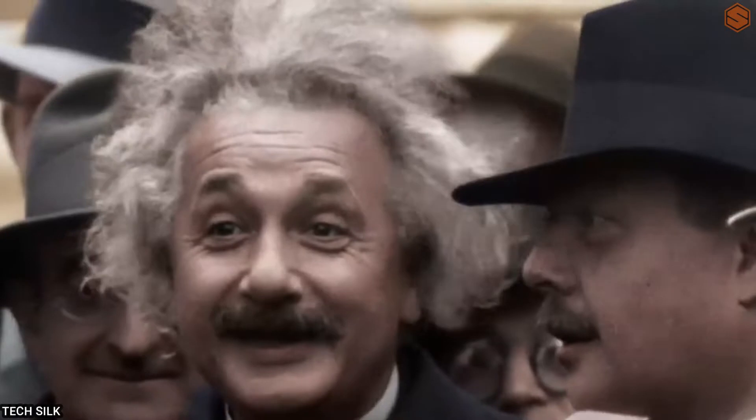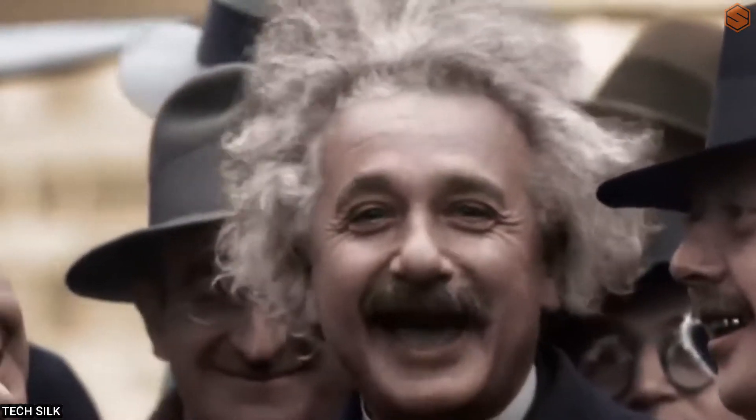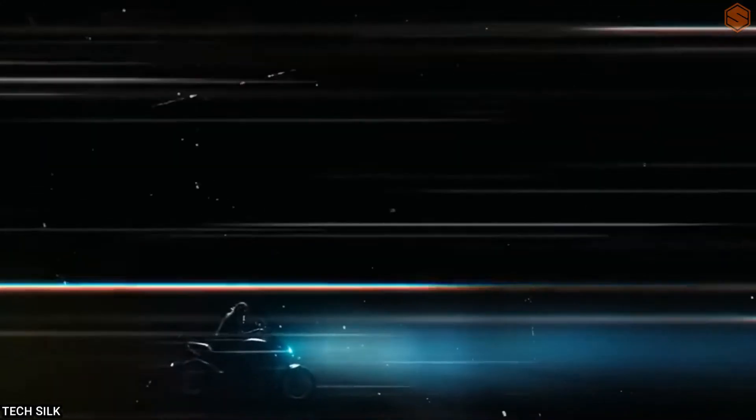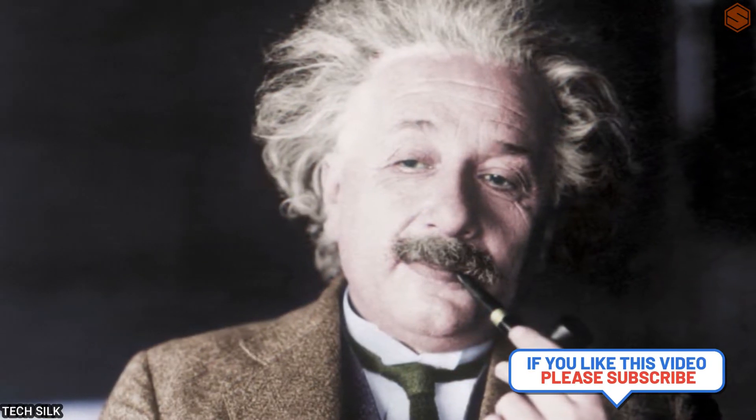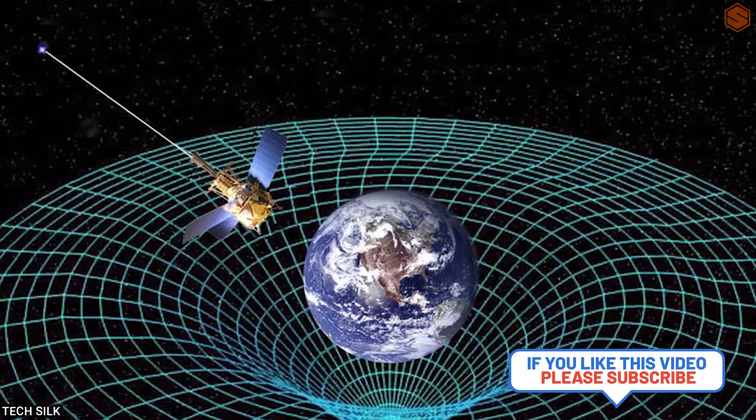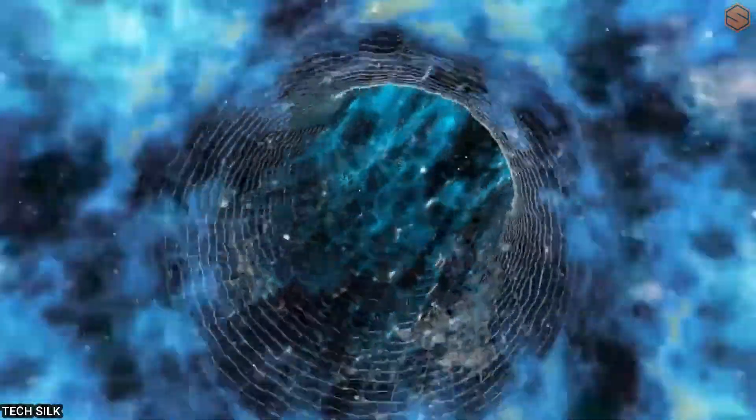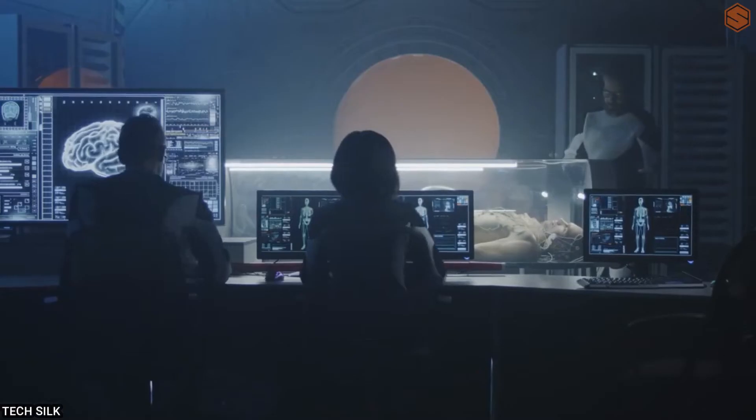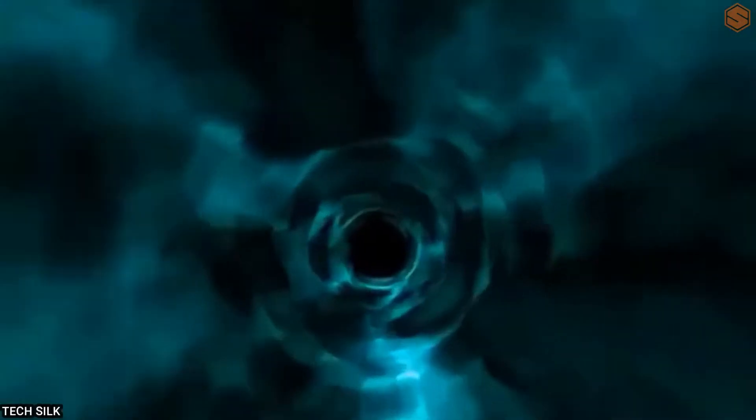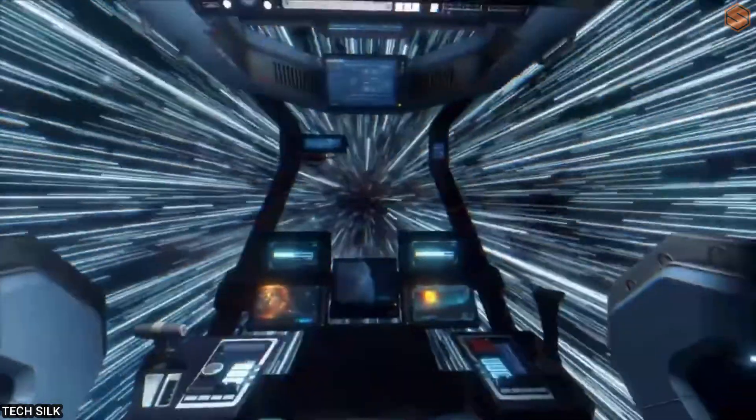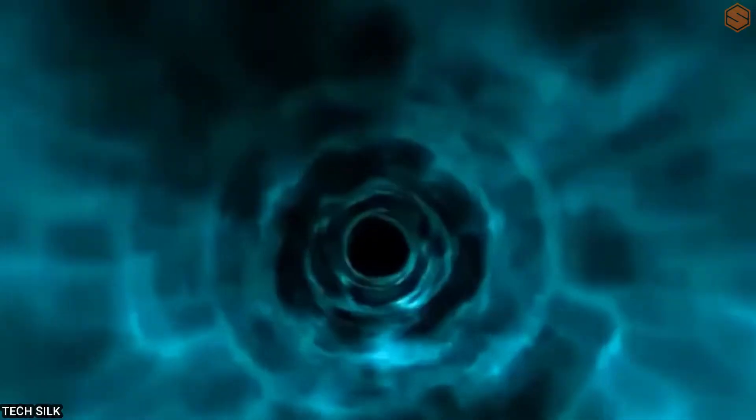As we all know, Albert Einstein's theory of special relativity says that nothing can travel faster than the speed of light. But what about particles that are heavier than light? Can they travel faster than light? In particle physics, there is a concept called tachyons. Tachyons are hypothetical particles that travel faster than light. The name comes from the Greek word tachys, which means swift. So far, there is no experimental evidence for the existence of tachyons. However, some theoretical models suggest that they might exist. If they do exist, it would mean that Einstein's theory of special relativity is not correct.